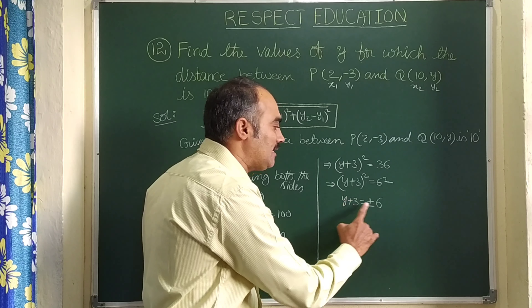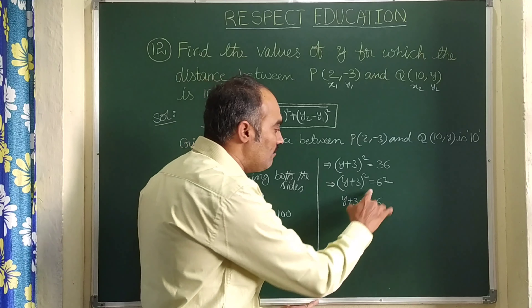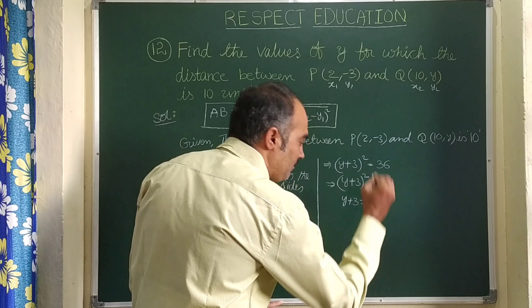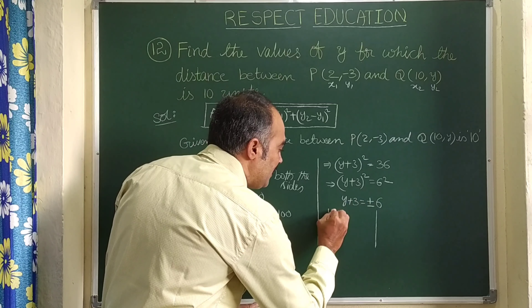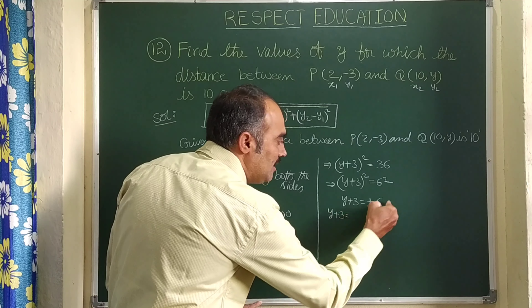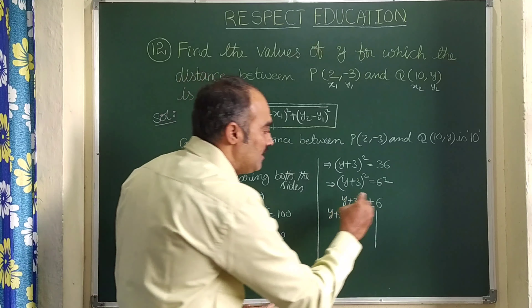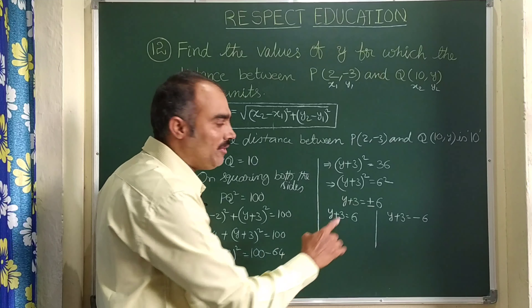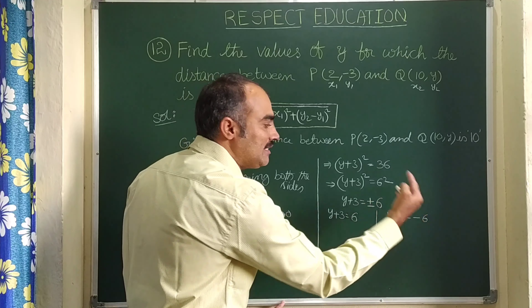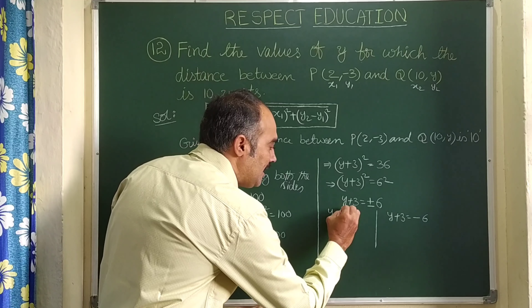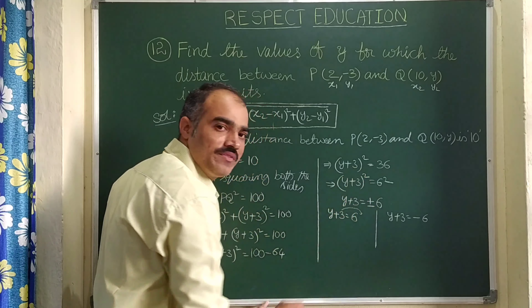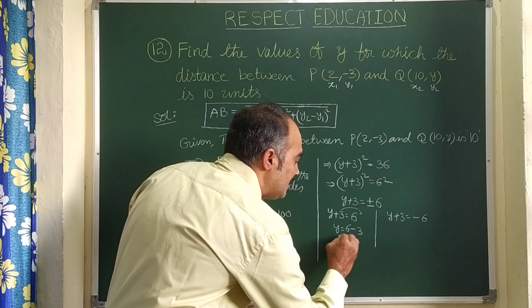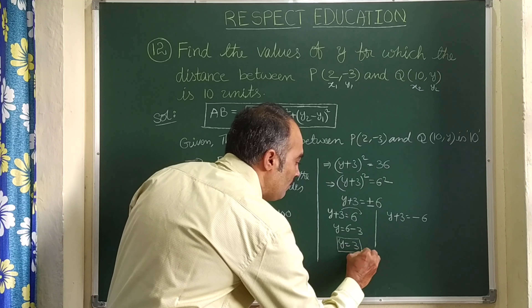Plus or minus means the problem splits into two cases. First case: y + 3 = +6, so y = 6 - 3 = 3. This is one of the values of y.